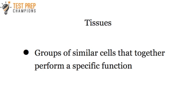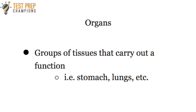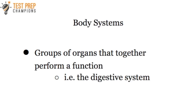Groups of similar cells that carry out a specific function together are what we call tissues. Groups of tissues make up what we call organs. Some common examples of organs are the stomach and the lungs. Groups of organs that work together to perform a function are what we call systems.